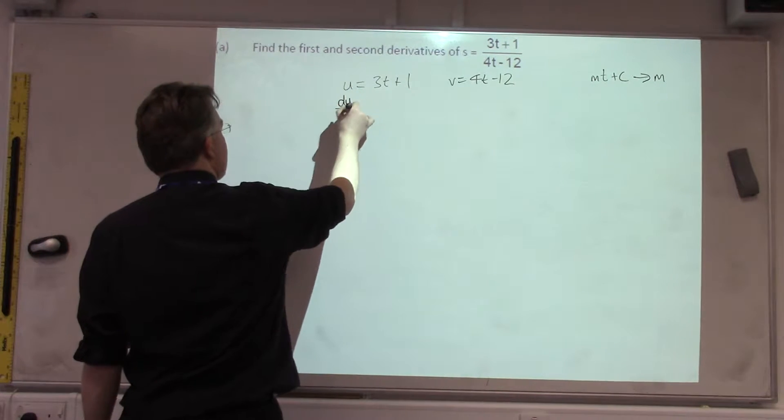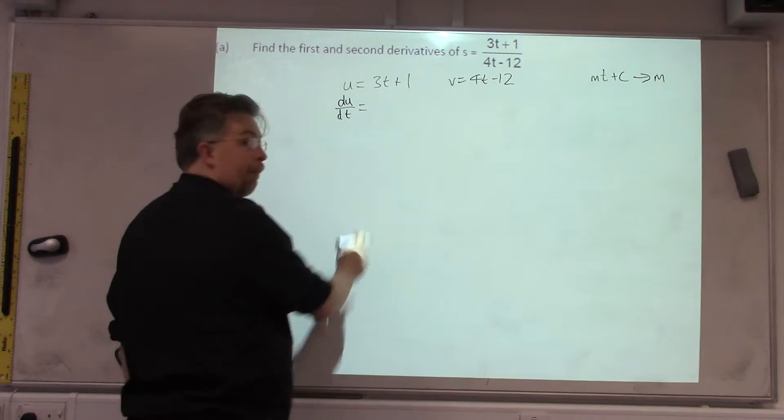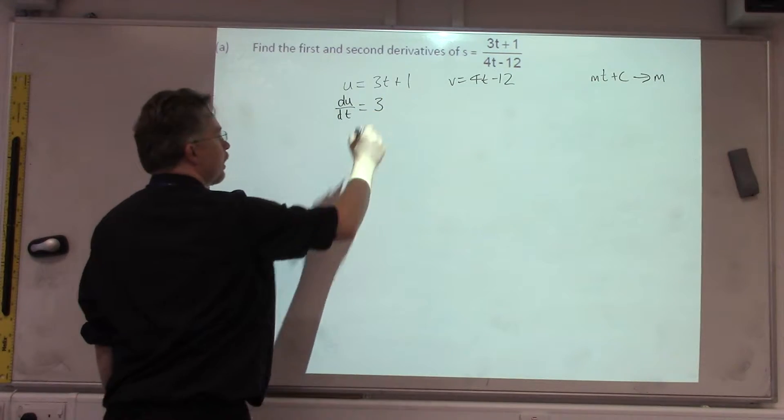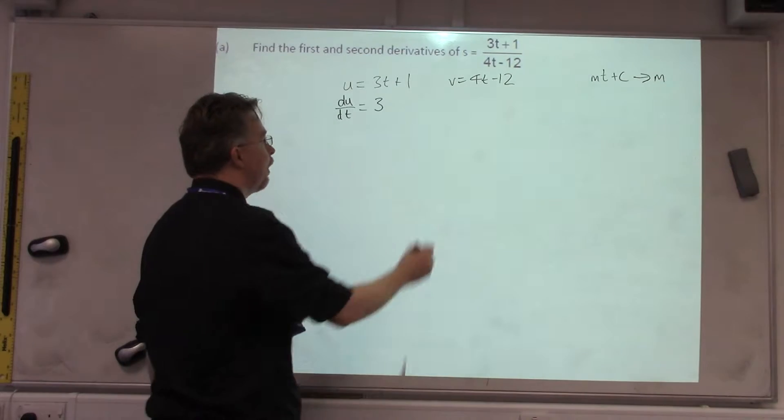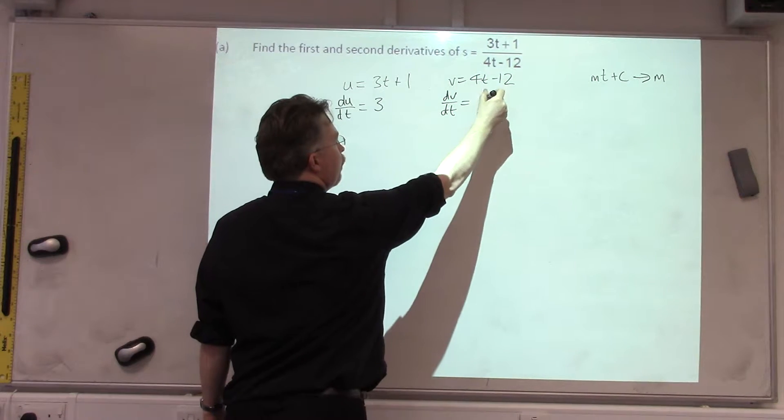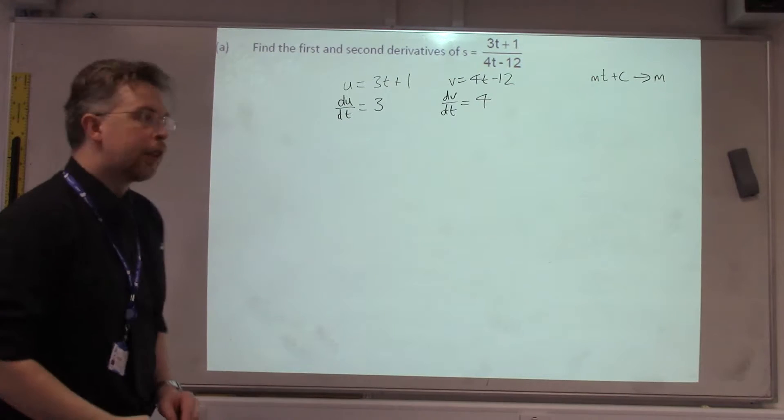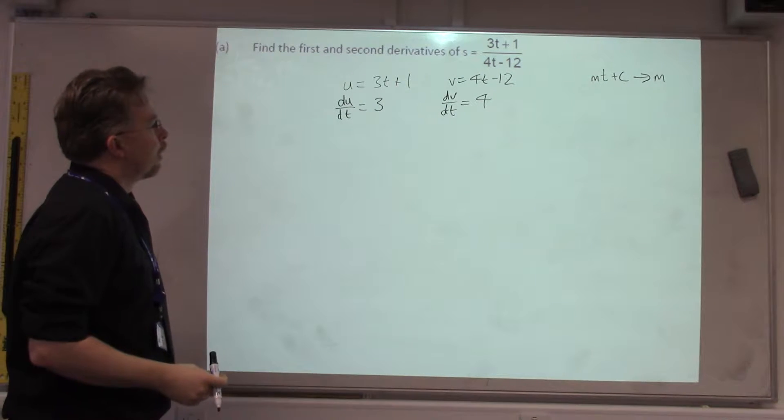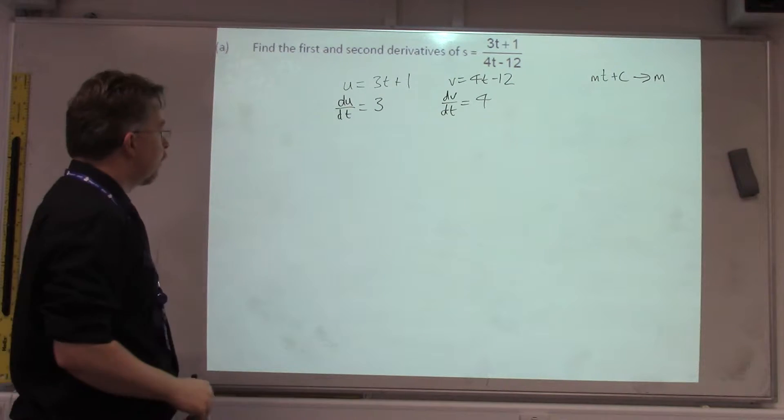So, in this case, the U by the T, the number in front of the T is 3. And then, the V by the T, the number in front of the T is equal to 4. So, they're fairly straightforward to differentiate these.